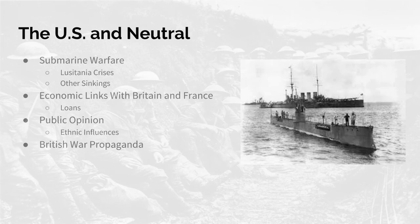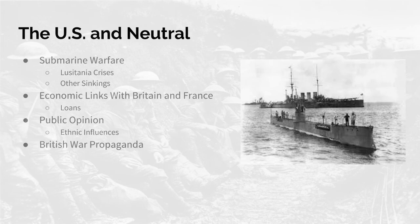Economic links with Britain and France: the U.S. was in a recession before World War I started. Since the U.S. was allies with Britain and France, they continued to supply war supplies to France and Great Britain, which benefited the U.S. economy. This was also the main reason the U.S. was not truly neutral between the central and Allied powers. They would also supply things like loans to the British and the French. J.P. Morgan helped out by giving loans to Great Britain and France at low interest rates.